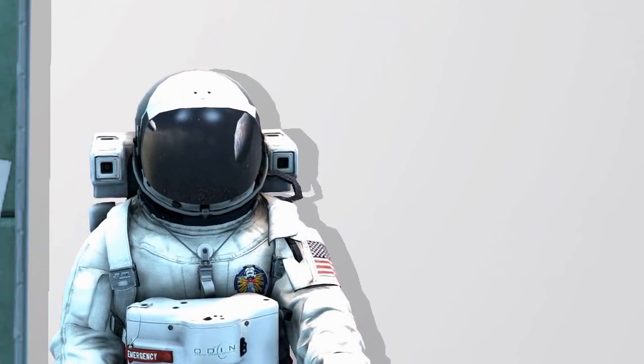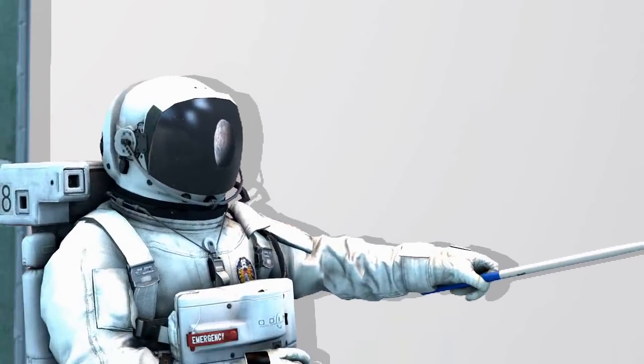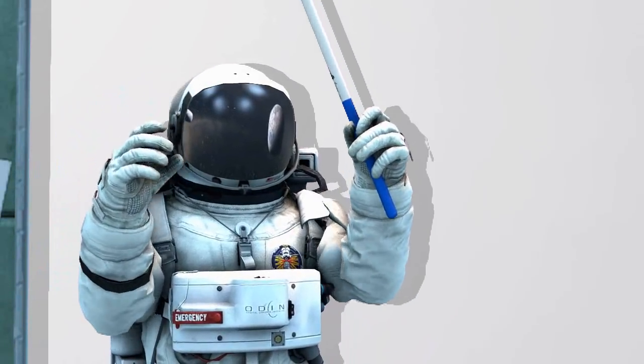The perfect enemy team for a Huskar would consist of a Zeus, Skywrath, Gyrocopter, Crystal Maiden, and I don't know, a Techies.